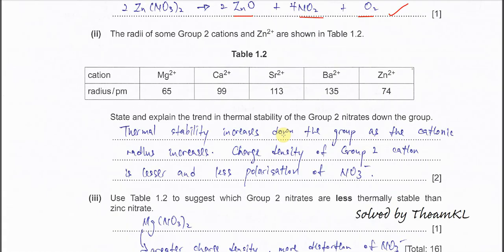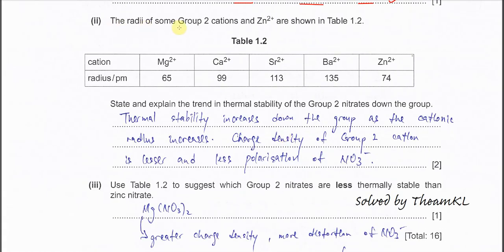Part two: the radii of some group 2 cations and zinc ion are shown in table 1.2. State and explain the trend in thermal stability of group 2 nitrates down the group. Looking at the group 2 cations first, we know that the size of the cation increases down the group. Therefore, the thermal stability increases, meaning down the group it is harder to decompose because the cationic radius increases.